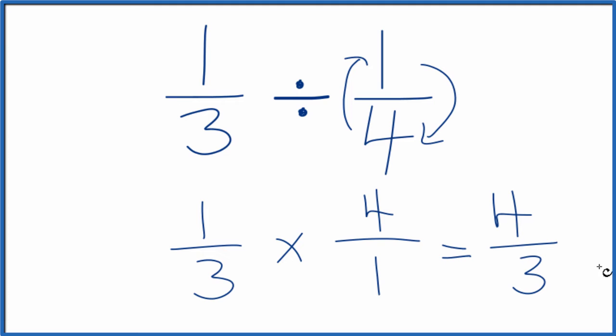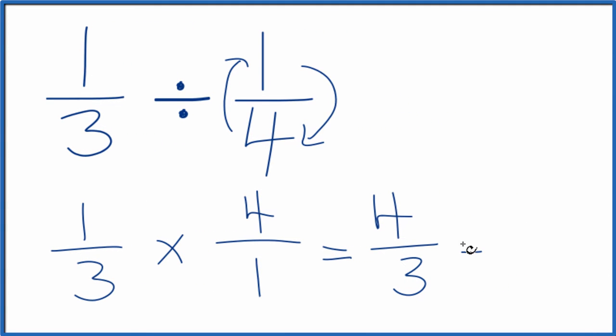This is an improper fraction. Some teachers might want you to change this to a mixed number, and we can do that pretty easily. Three goes into four one time with one left over, so we have one and one-third. So we divide one-third by one-fourth, we get one and one-third.